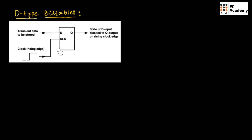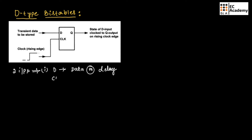This is the block diagram of D type bistable. If you observe this block diagram, D type bistable has two inputs. First one is D, which represents data or delay, and second one is CLK, that represents clock.